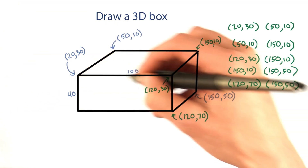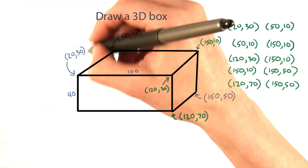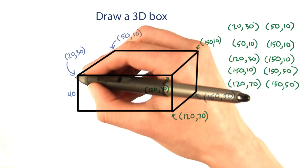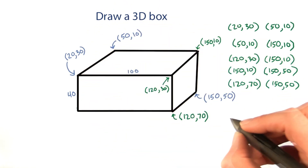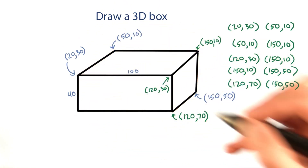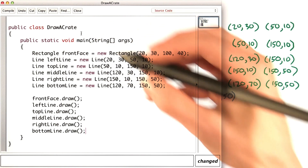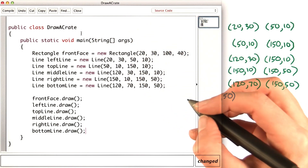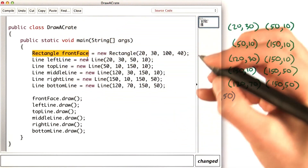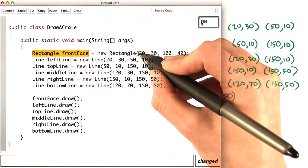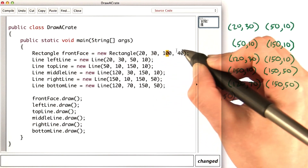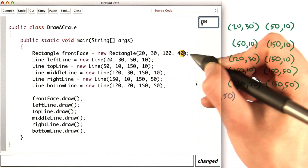The rectangle has its top-left point here, and it gives us the width and the height, so we know how to specify that one. Here's how I wrote the code to draw the crate. There's a rectangle, which is that front face — top left 20, 30, width 100, height 40.